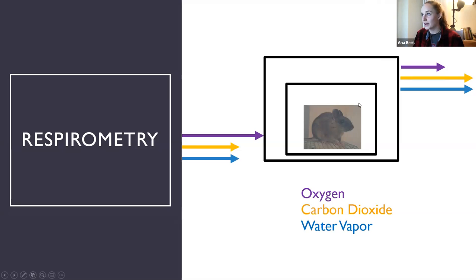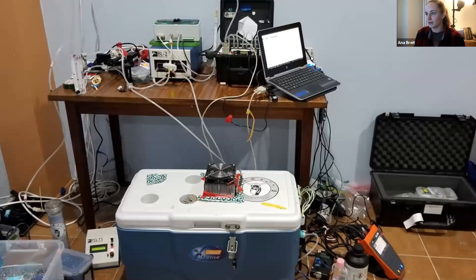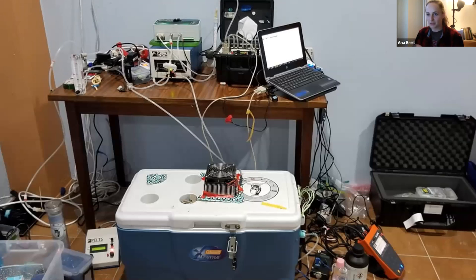I put the animal in a box inside a temperature control unit — essentially a cooler — to fluctuate the temperature. It was very hot in Borneo, so the coldest I could make my box was 22 degrees Celsius, which is accurate to what the animal would have experienced outside in the forest. I also had a USB video camera to constantly monitor their activity and could take them out if they were distressed.